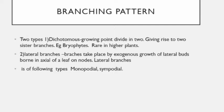In multiparous or polychasial type, when the terminal bud stops and growth is continued by more than two lateral buds, it is called the multiparous kind. Examples are Nerium and Euphorbia.